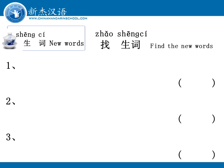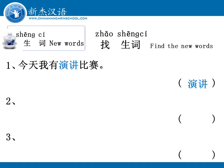今天我有演讲比赛。 现在是下午一点。 Sentence three: 我上午九点整，有课。